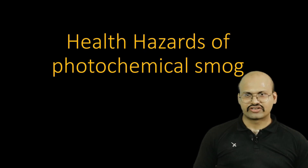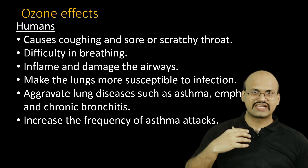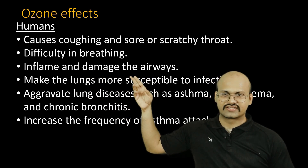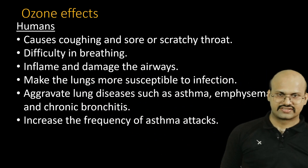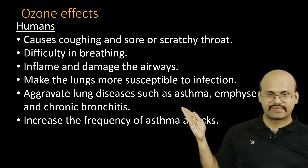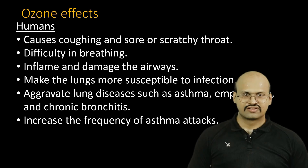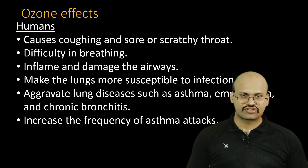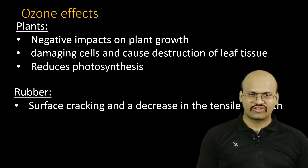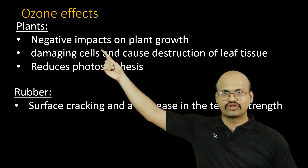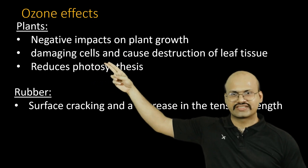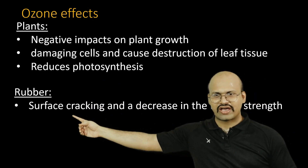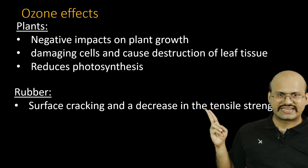Now let's see the health hazards of photochemical smog. Ozone causes coughing and a sore or scratchy throat, difficulty in breathing, inflammation and damage to the airways. It makes lungs more susceptible to infection and aggravates lung diseases and asthma, increasing the frequency of asthma attacks. Ozone also causes negative effects on plants — it reduces plant growth, damages cells and tissues, and reduces photosynthesis. Rubber is known to develop surface cracking in the presence of ozone, and its tensile strength decreases.